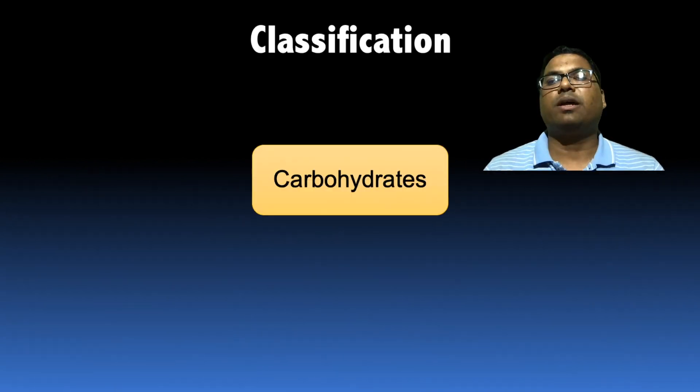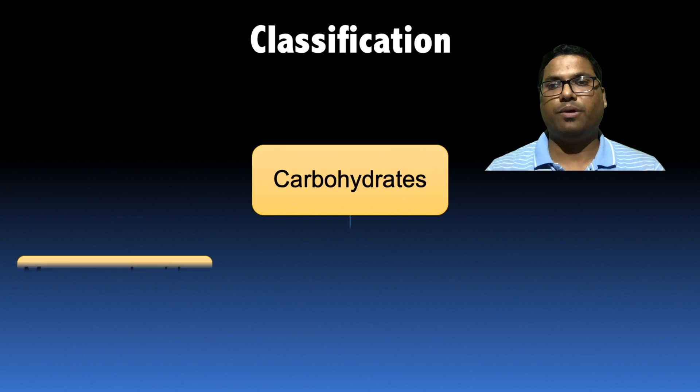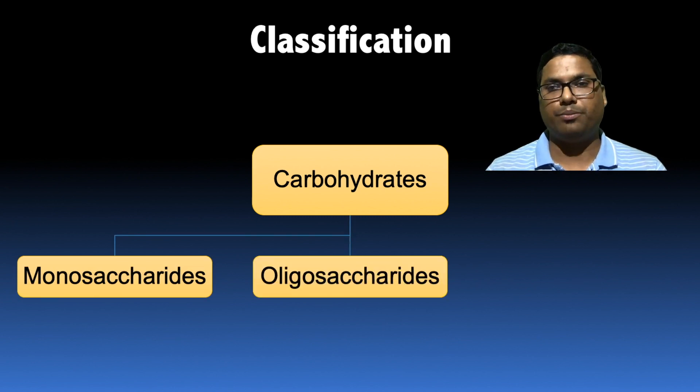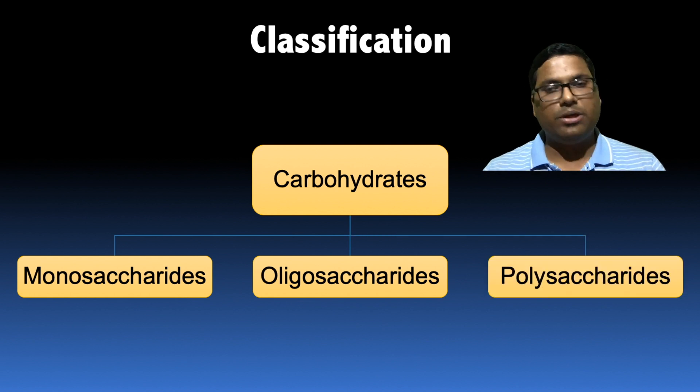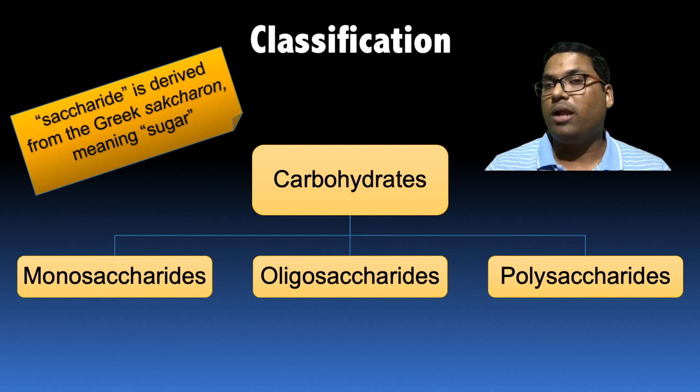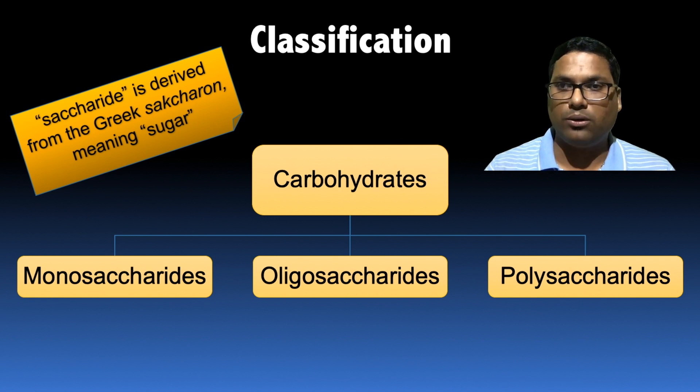Now let us see the classification of this particular carbohydrates. So carbohydrates are classified into three groups. The first is called monosaccharide, the second is called oligosaccharide, and the third one is called polysaccharide. Now in all of this you must have seen the saccharide, which is derived from a Greek word saccharide which actually means sugar.